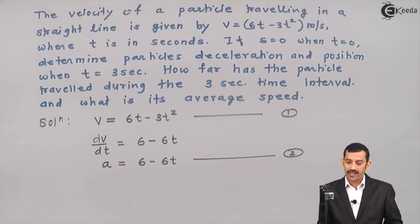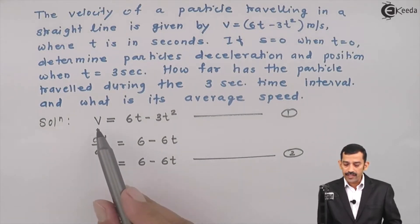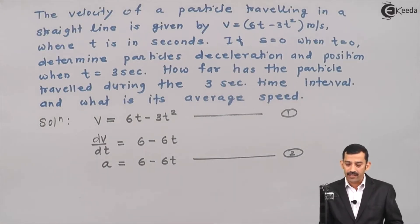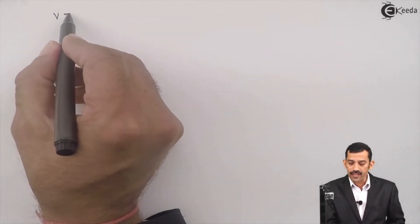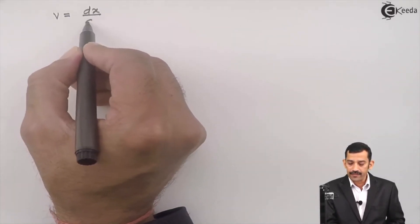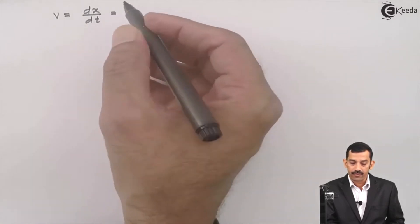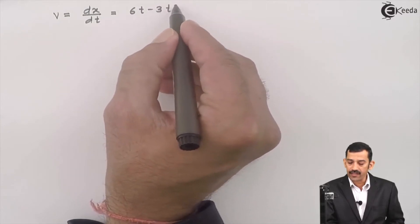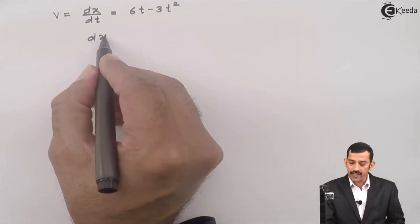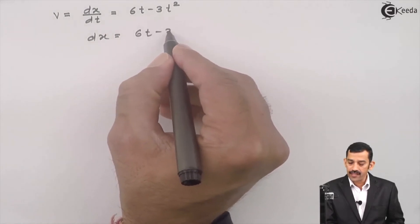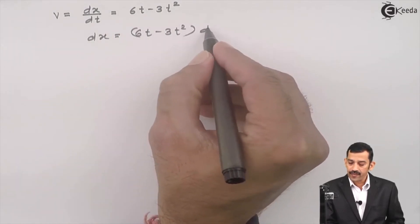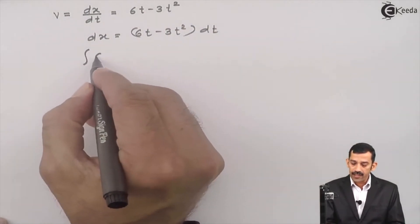This is equation number 2 — the equation of acceleration. We also need a third equation: the equation of position. Writing v as dx/dt (rate of change of displacement with respect to time), we have dx/dt = 6t minus 3t², so dx = (6t minus 3t²) dt.